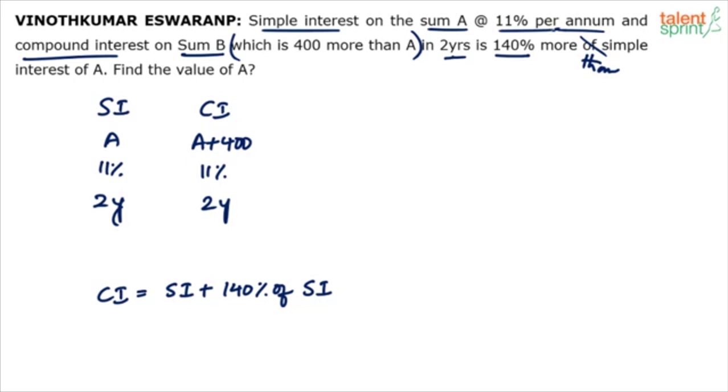Solve this now. See what will be the simple interest? Very easy. From this I can say SI is equal to you know that for 2 years at 11% simple interest will be 22%. 22% of what? 22% of A. That is the simple interest case.